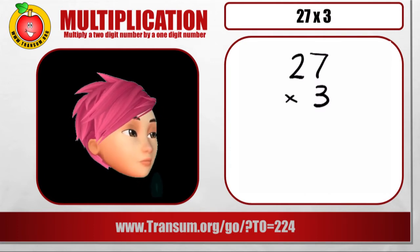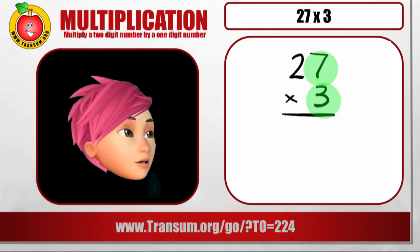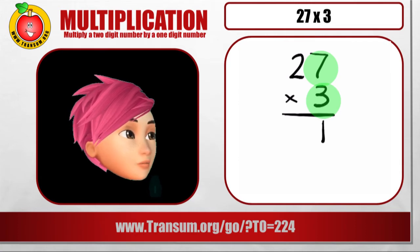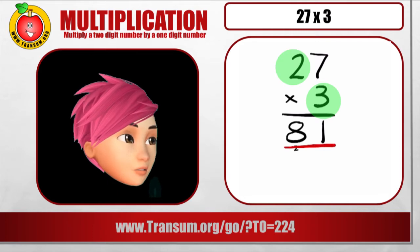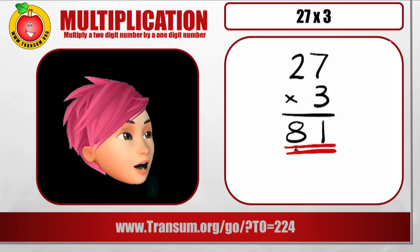Put a line and then multiply the ones first. 3 multiplied by 7 is 21. So you write down the 1 in the line and you carry the 2 underneath. Then 3 times 2 is 6. Add on that 2 that you carried and the answer is 81.